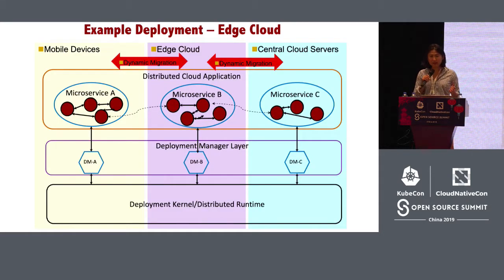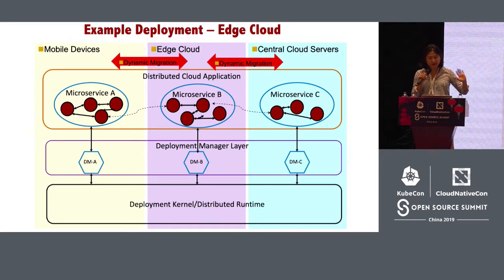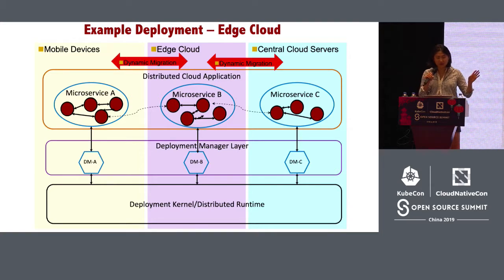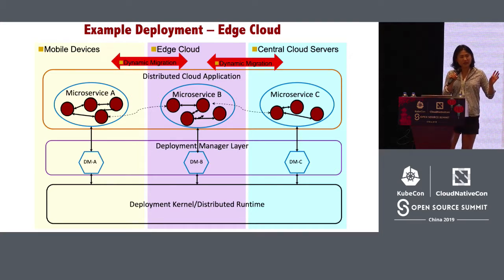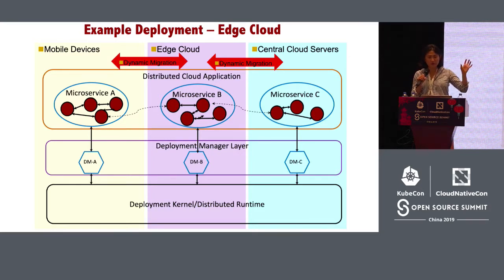As an example, the application programmer takes their application and splits it into a couple of large microservices. Underneath, we have the deployment kernel running these microservices. But then for each microservice, there's going to be a deployment manager that provides the exact functionality and deployment tasks that each microservice needs.